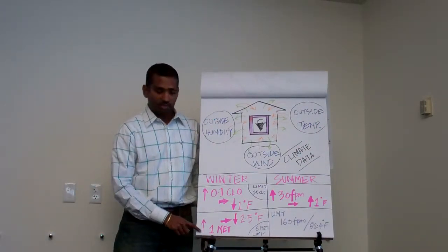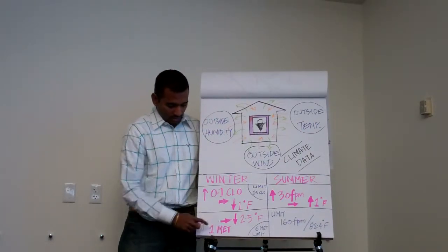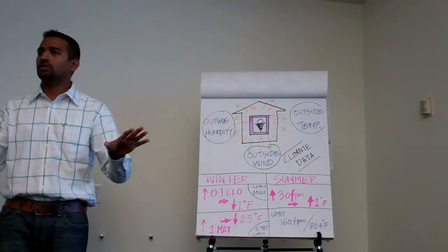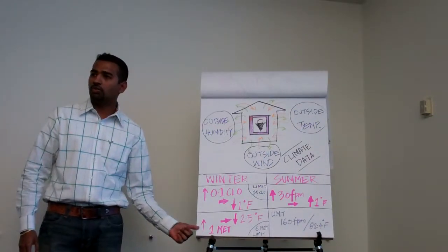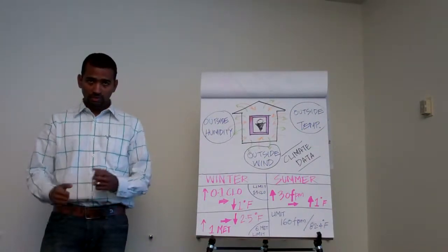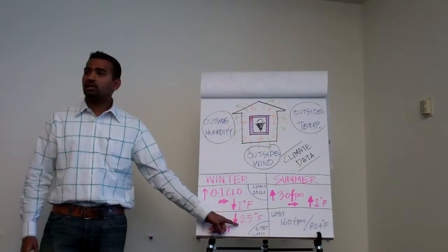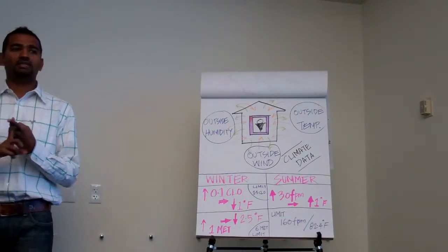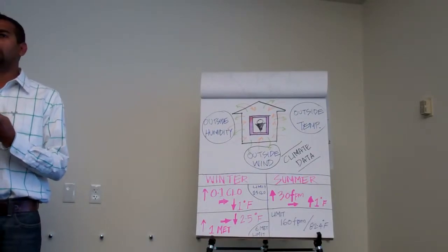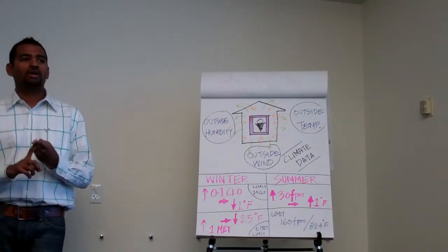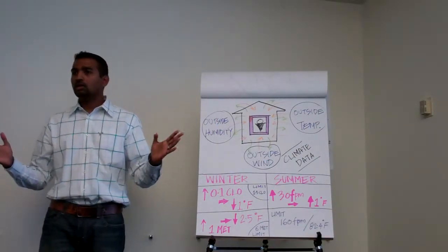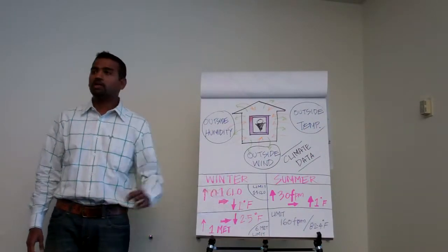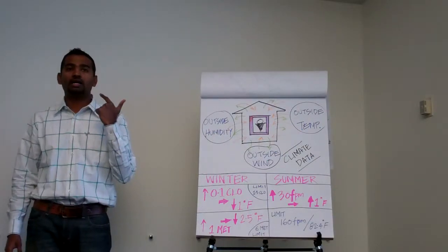On the other side, increasing the metabolic rate — right now, seated, you're at about 0.9 to 1 MET. You increase that by one more MET, which is walking — just walking fast — and you can drop the temperature by two and a half degrees. Imagine how much we can save: two and a half degrees in Phoenix. Please ask the question to your client: why can't we assume everybody in the room is walking? No — but if the facility is a gymnasium, we should drop the setpoint by two and a half degrees. We should at least ask the question.